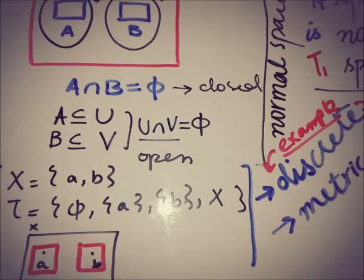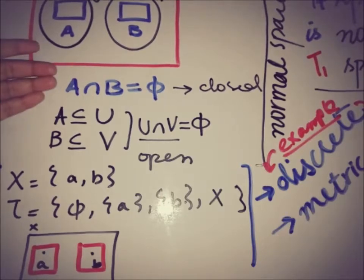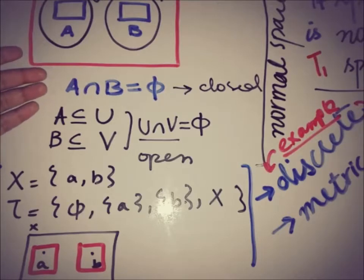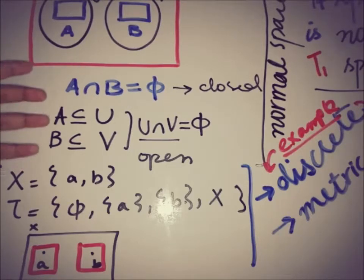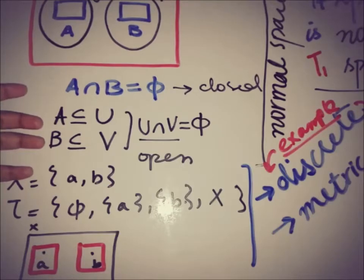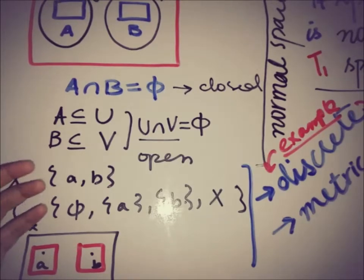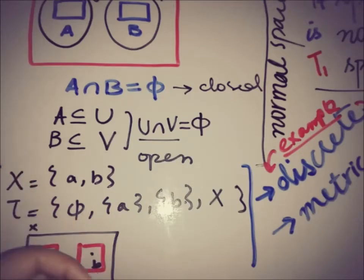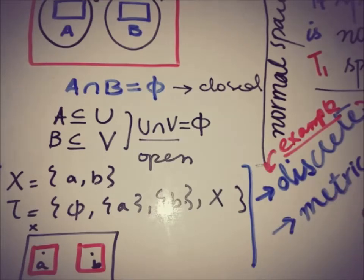To recap: a normal space requires two closed sets whose intersection is empty, and two open sets such that this separation requirement is fulfilled with their intersection also empty. A T4 space is a normal T1 space, also known as a Hausdorff normal space. Common examples of normal spaces include the discrete space and a metric space.